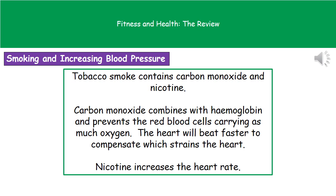Smoking increases blood pressure because tobacco smoke contains two important chemicals: carbon monoxide and nicotine. Nicotine is a stimulant, so it increases heart rate. Carbon monoxide combines with the hemoglobin in red blood cells, stopping them from carrying as much oxygen. As a result, the heart beats faster to try to compensate for the reduced oxygen delivery, putting it under strain. The combination of carbon monoxide reducing oxygen-carrying capacity and nicotine stimulating heart rate places you at much greater risk of increased blood pressure.